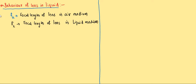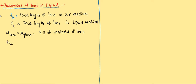To understand this, we need some terms. The refractive index of the lens material — for example, if it is made with glass, it is the glass refractive index. The refractive index of air is generally taken as 1, and the refractive index of liquid we take as n_liquid.